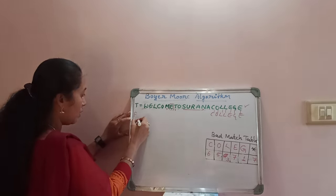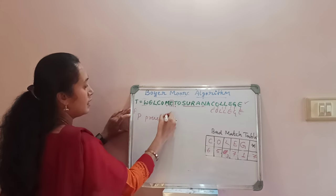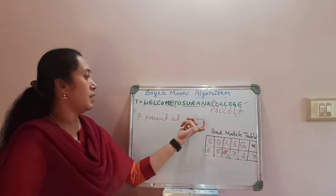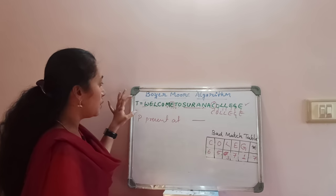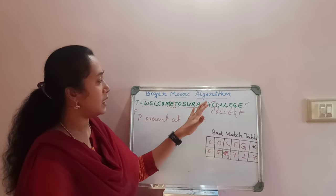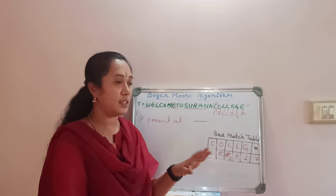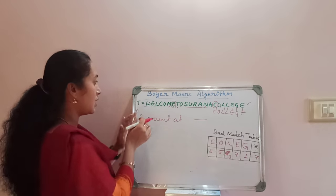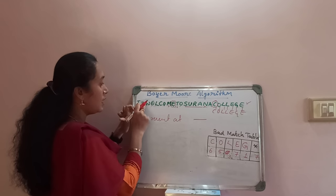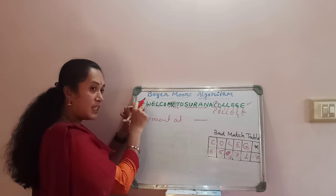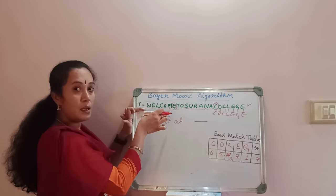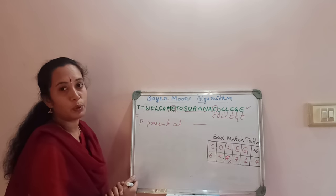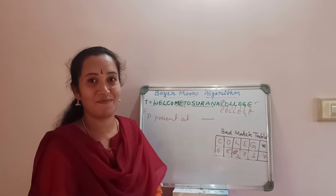We write the output: P is present in T at the corresponding position. This is exactly the procedure of the Boyer-Moore pattern matching algorithm. The main feature of this algorithm is the matching always starts from the right side to the left direction. You start from position zero of the pattern aligned with the text, but match from right to left. This is the procedure of the Boyer-Moore algorithm. Thank you.